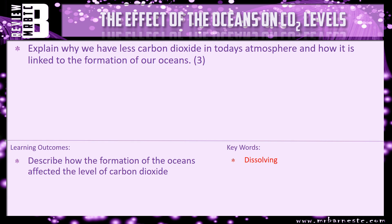There is a review question: explain why we have less carbon dioxide in today's atmosphere, and how it is linked to the formation of our oceans. As you can hopefully see, it's exactly the same question. Oceans formed because the water condensed to form our oceans, and then how did the carbon dioxide change? It went down — why? What we've just been talking about.